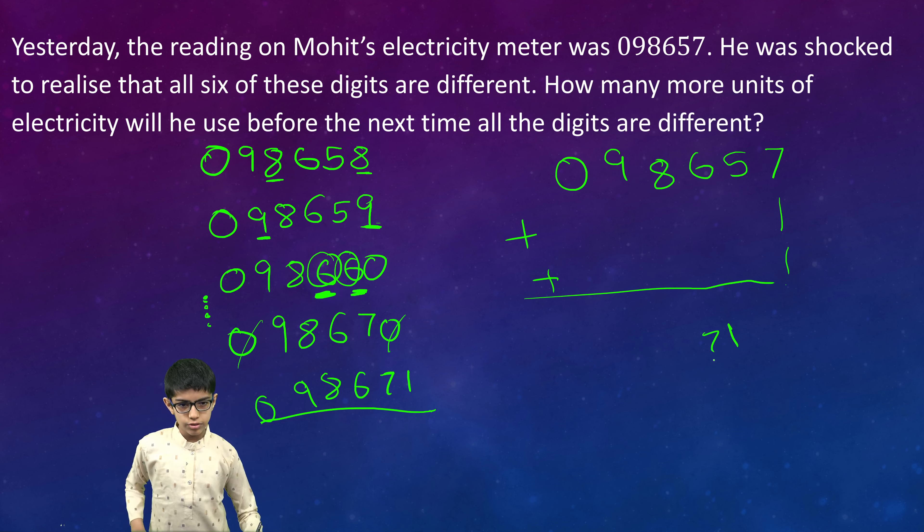Now we will take the difference of 71 and 57. The answer is 14.